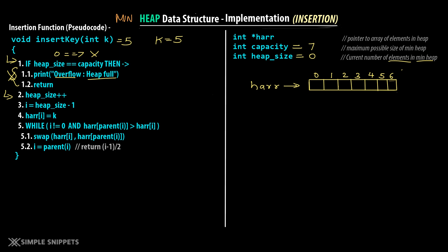Step 2: heap size plus plus — heap size becomes 1, since we've confirmed the heap is not full and we're proceeding with insertion. Step 3: i equals heap size minus 1, so i equals 1 minus 1 which is 0. Step 4: h array of i equals k, meaning h array of 0 equals 5. So we insert 5 at index position 0.